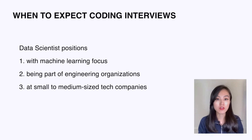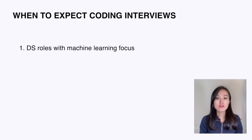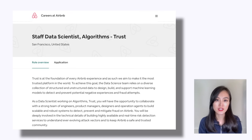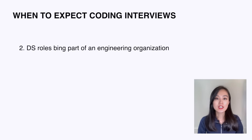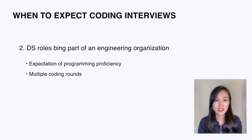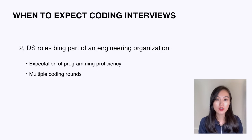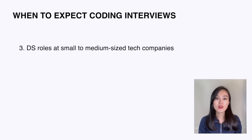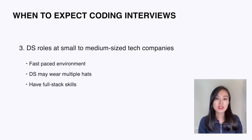But if you are looking for a position in any of the following three categories, the chances will be high. The first category is data scientist positions with a machine learning focus — data scientists in these roles often work closely with engineers to productionize machine learning models, similar to machine learning engineer or research scientist roles. Examples include data scientist algorithms at Airbnb and Lyft. Another category is where data science is part of an engineering organization, with a general expectation that every data scientist has sufficient programming proficiency. Robin Hood's data scientist position is an example.